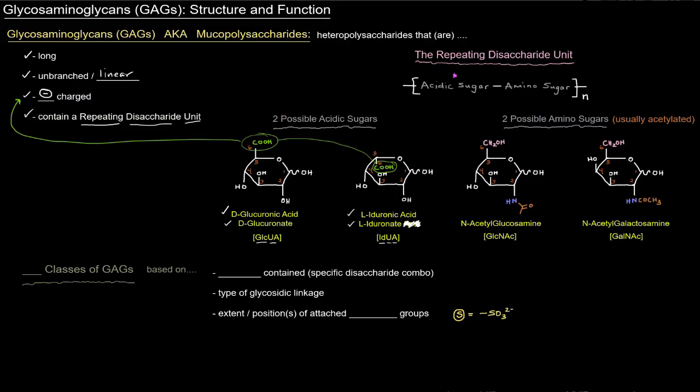Now that's for the acidic sugar. I do want to mention here that there's this little star right here. There is an exception to this little repeating disaccharide unit, and that's something that we'll show later when we actually show the actual disaccharide units of the different classes of glycosaminoglycans, which we'll get to later.